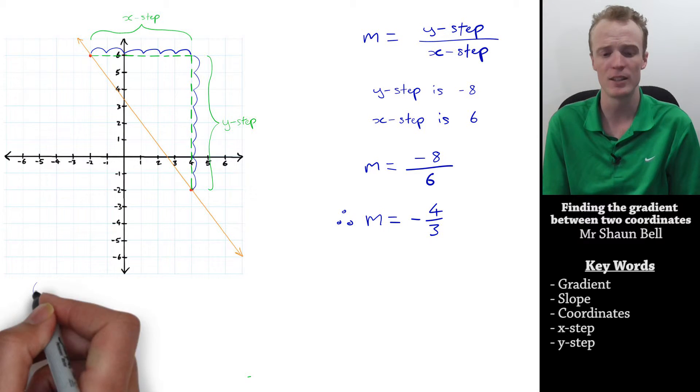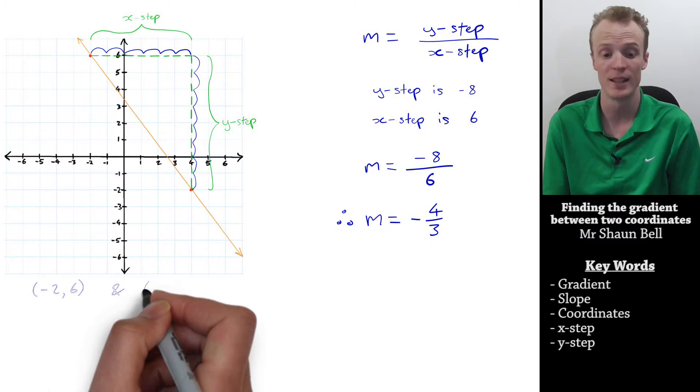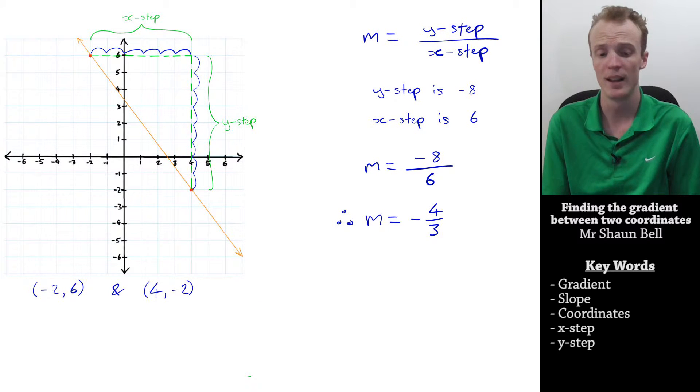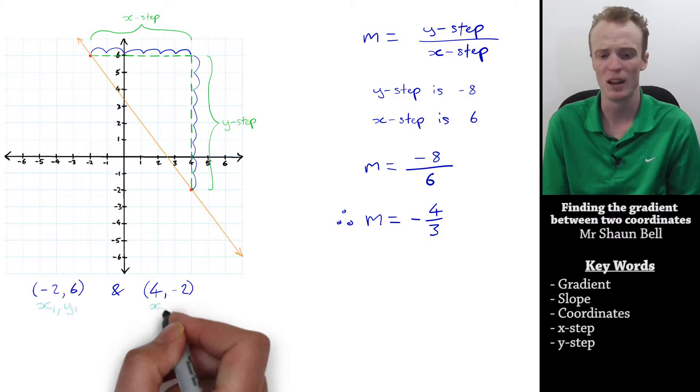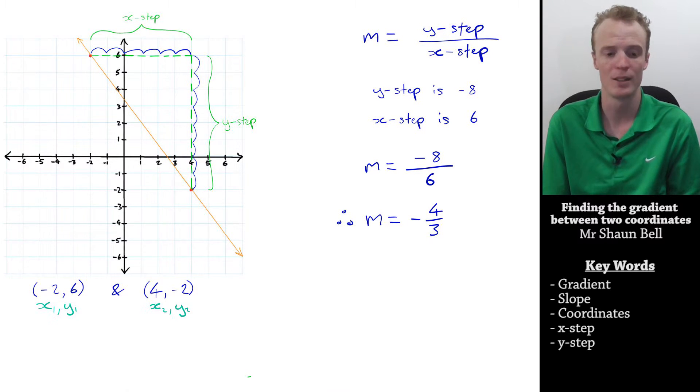Well, let's consider these coordinates again, of negative 2 and 6, and 4, negative 2, and give them labels to help us refer to them as we go. So, to help us, I'll call this first coordinate x1, y1, and this second coordinate x2, y2.